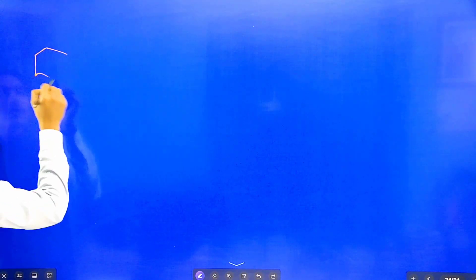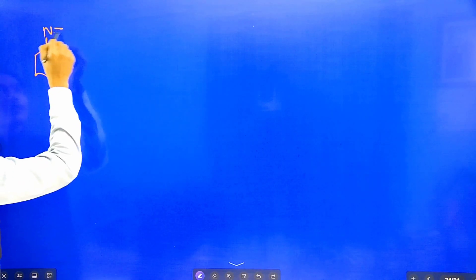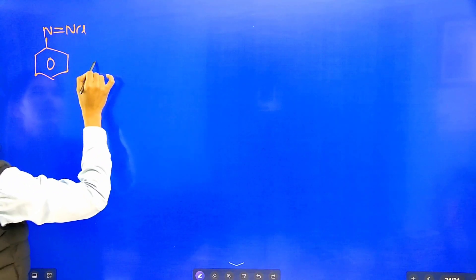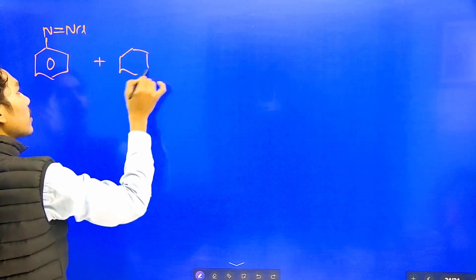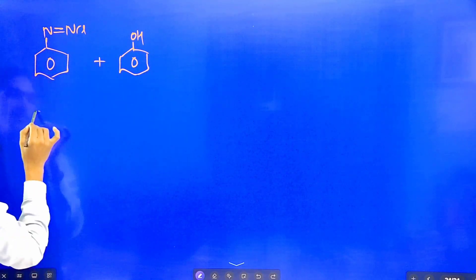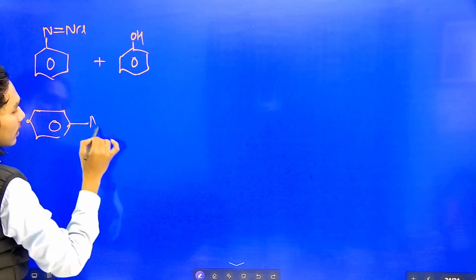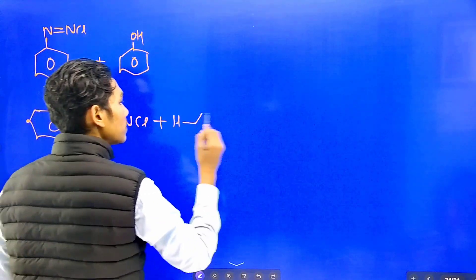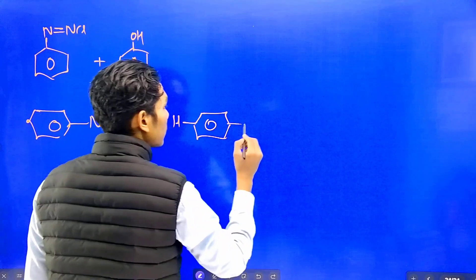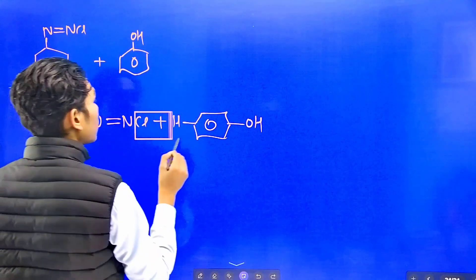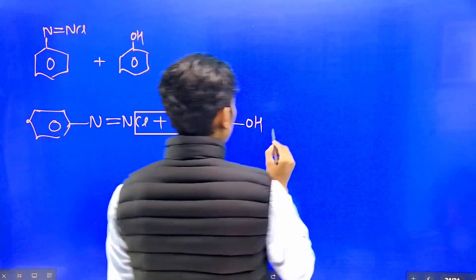For the iodo reaction, we react benzene diazonium salt N double bond NCl. We add KI and when we heat this, the benzene ring with iodine attached is formed, iodobenzene.